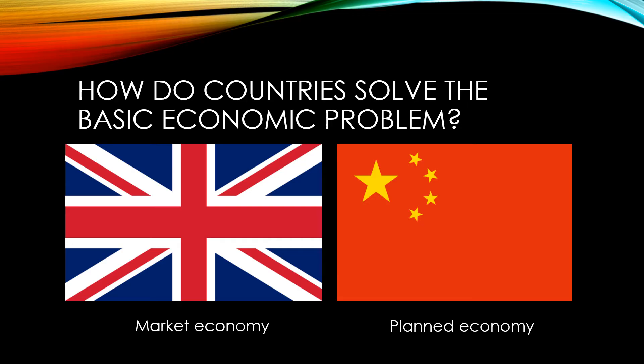Different countries approach the basic economic problem in different ways. It can be seen as a spectrum from market economies to planned economies. In a fully free market economy, all resources would be allocated by the market forces of demand and supply. Whereas in a planned economy, all resources are allocated by the state.